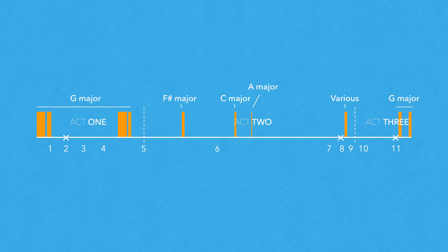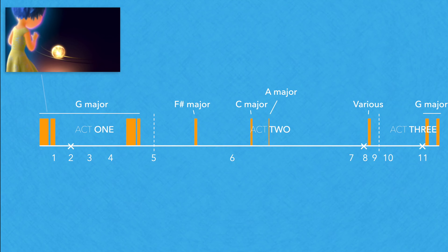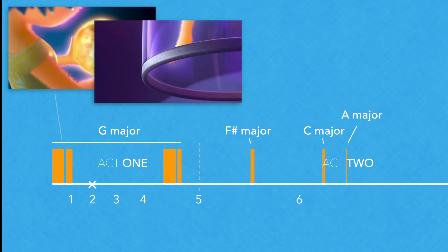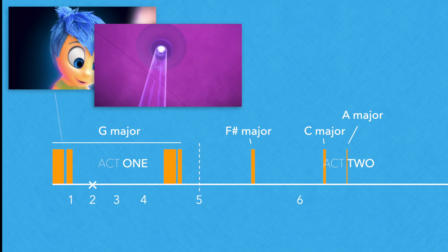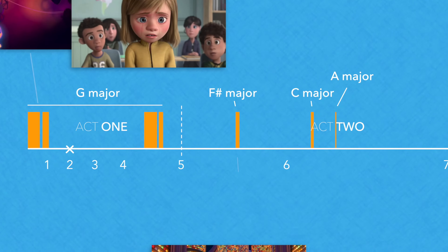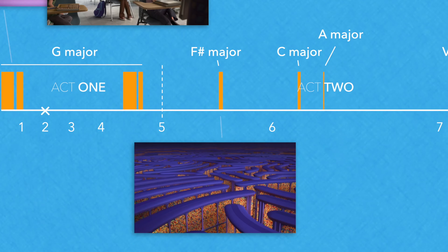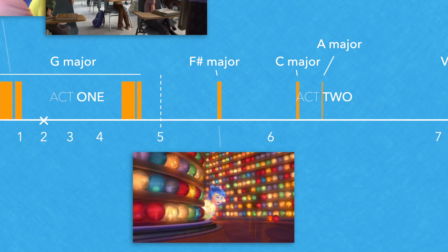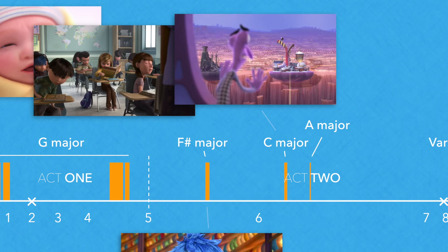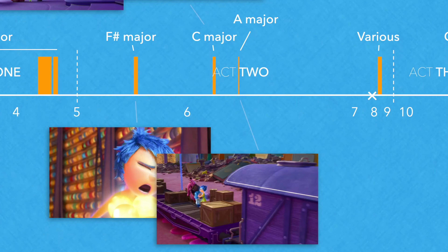A tonal design for the music. When Joy is in the headquarters before Riley moves away from Minnesota, the main theme sticks in its home key, G major. But after Joy and Sadness are thrown out of headquarters, we won't hear a G major version until the lead-in to Act 3. In the second act, we hear it in F sharp major, then C major with an altered harmony underneath, and finally in A major, but this time superimposed on top of the harmony from Sadness' theme.